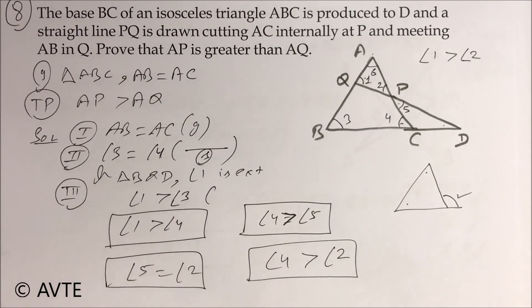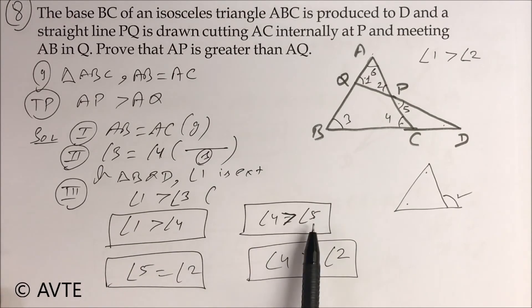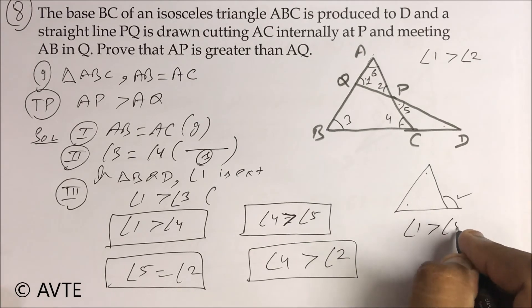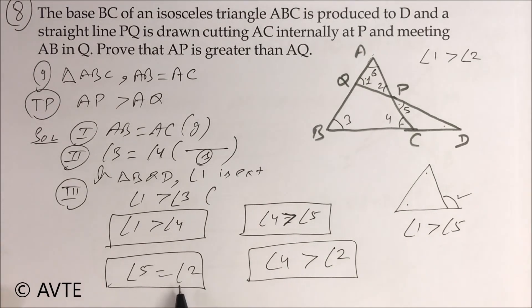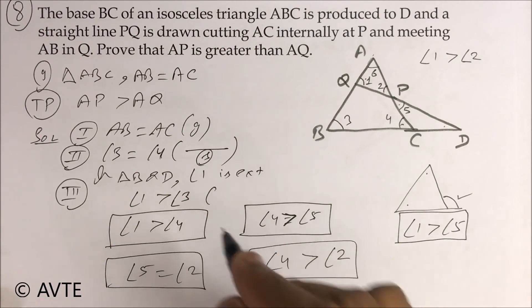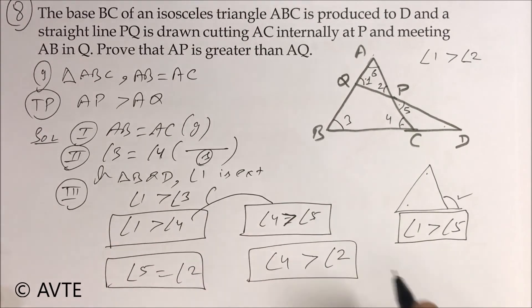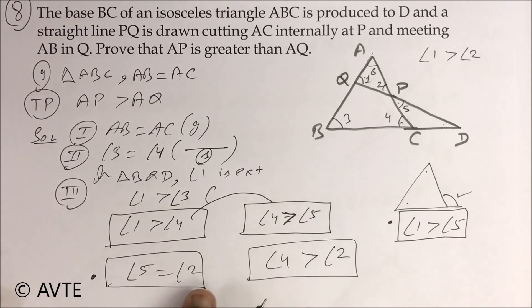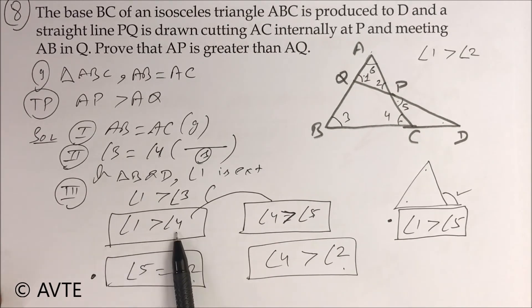You just link all the pieces together: angle one is greater than angle four, and angle four is greater than angle five. So angle one is greater than angle five. But angle five is equal to angle two, so it means angle one is greater than angle two.